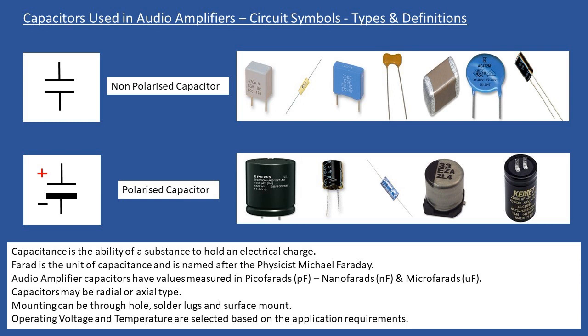Some amplifier circuit boards will have the polarity clearly marked, and different manufacturers use different symbols — some denote the positive terminal, some the negative. When recapping an amplifier, take time to note the polarity when removing capacitors before installing new ones, because it's very easy to get the polarity incorrect, fit it, and then discover issues when testing.